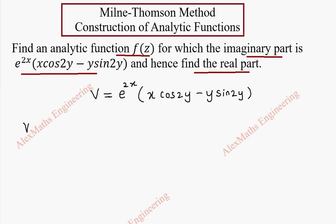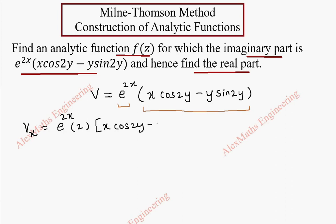As a first step we are going to find vx, the partial derivative with respect to x. We follow the product rule, keeping e^(2x) as one term and (x cos2y minus y sin2y) as the other. The derivative gives 2e^(2x)(x cos2y minus y sin2y) plus e^(2x) times cos2y, since cos2y is constant and the y sin2y term differentiates to zero.